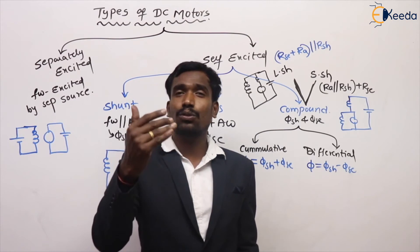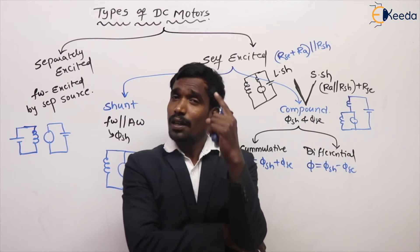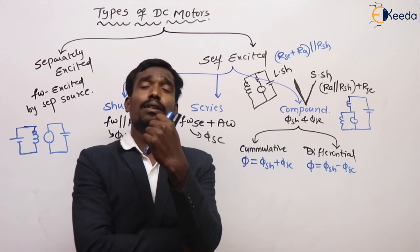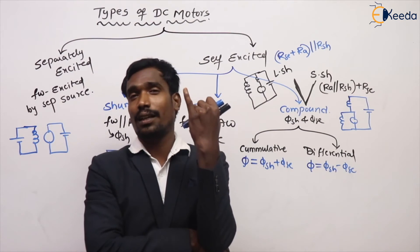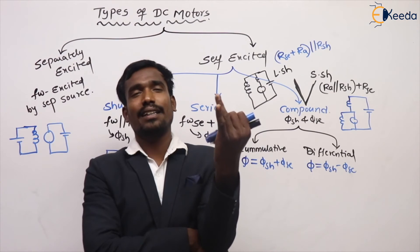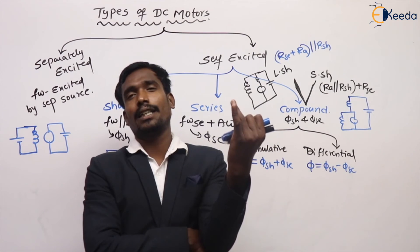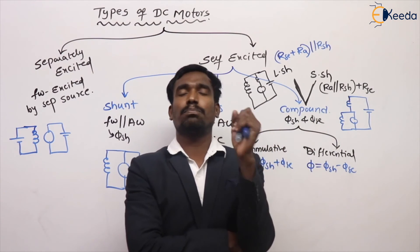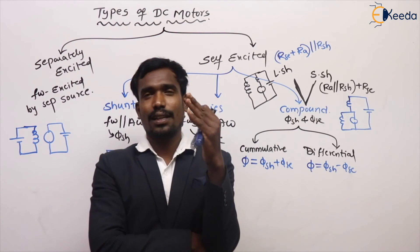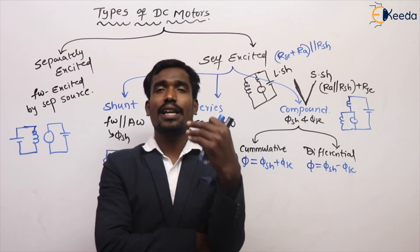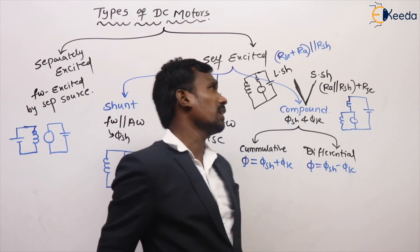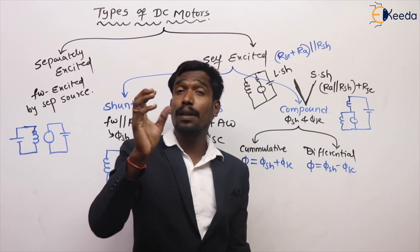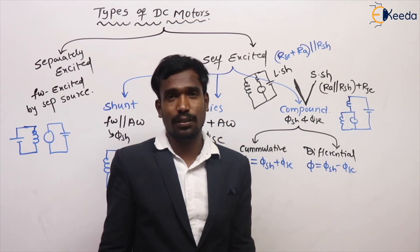From these equations, we have to draw the graphs. In generators, we draw OCC, internal and external characteristic curves. But in motors, we have to draw the curves for torque and speed: torque with armature current, speed with armature current, and speed with torque. These are the graphs we have to draw for each and every motor. The applications of DC motors are also important.